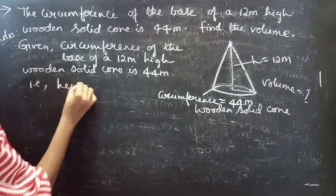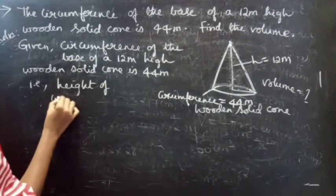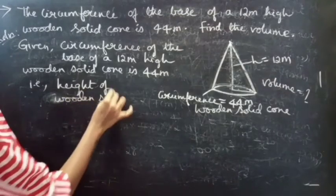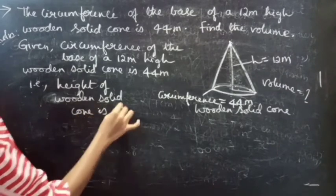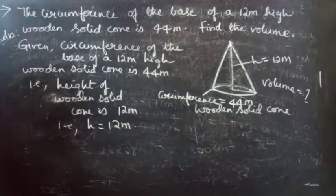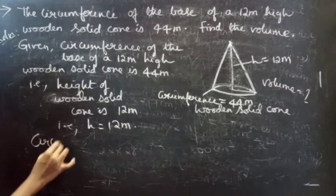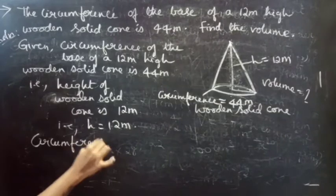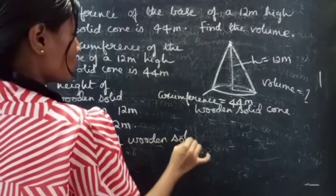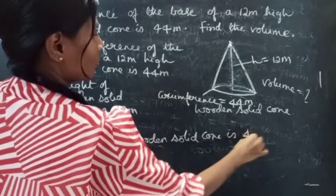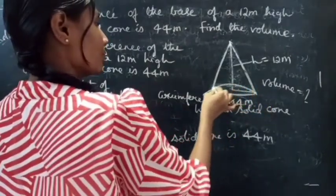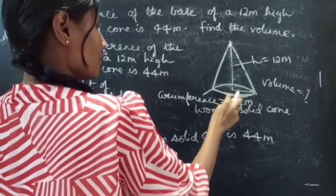We are given that the height of the wooden solid cone is 12 meter, that is h equals to 12 meter. The circumference of the wooden solid cone is 44 meter. We are having a circular base, and the circumference of this circular base is 44.